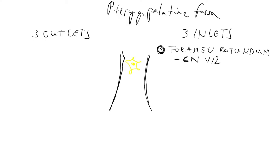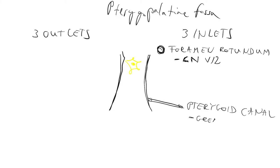The second connection is between the external cranial base and the Pterygopalatine fossa — it would be here. It is called the Pterygoid canal. It contains the Greater Petrosal Nerve. The Greater Petrosal Nerve is a branch of the facial nerve; this is a preganglionic parasympathetic viscero-motor branch. For more details, check the neuroanatomy lectures. You don't need the fiber compositions of these structures in anatomy one.